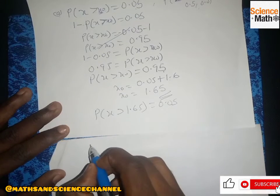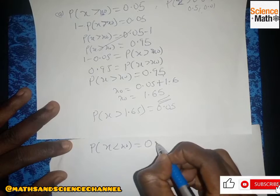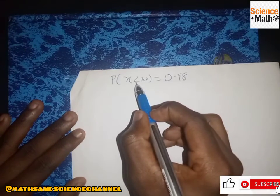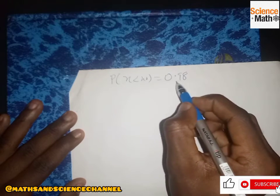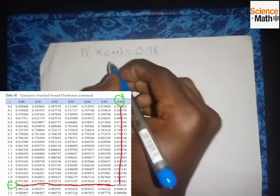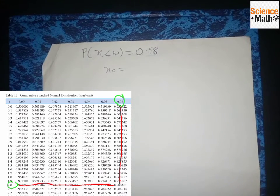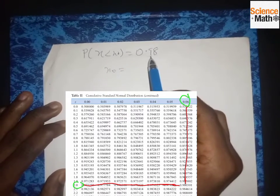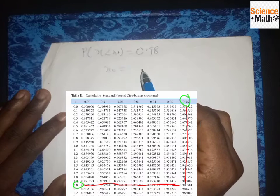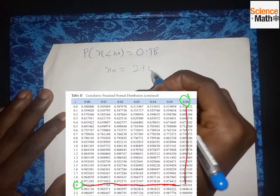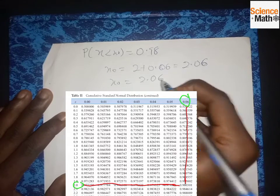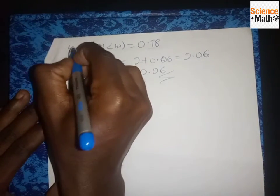For part (b), we find s-naught such that P(S < s-naught) = 0.98. Since it is a 'less than' condition, we go straight to the z-table and look up 0.98. Tracing on the positive z-table, we find 2 on the right-hand side and 0.06 at the top, giving z = 2.06. So s-naught equals 2.06.